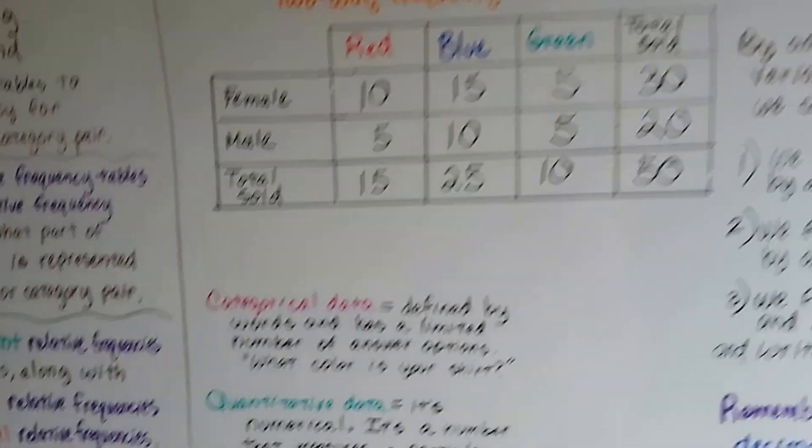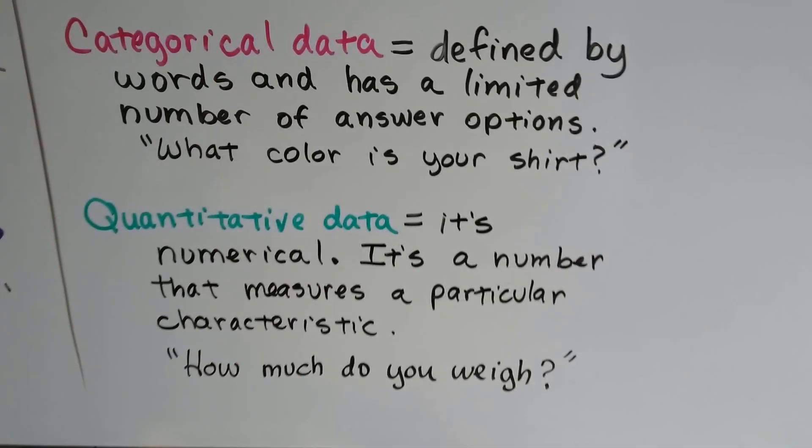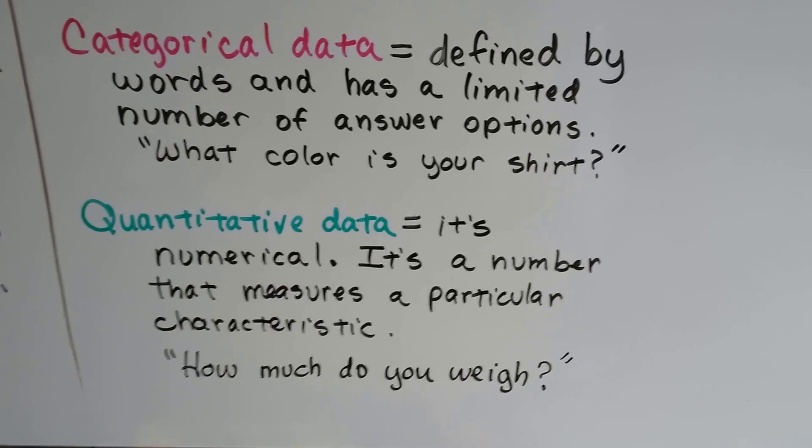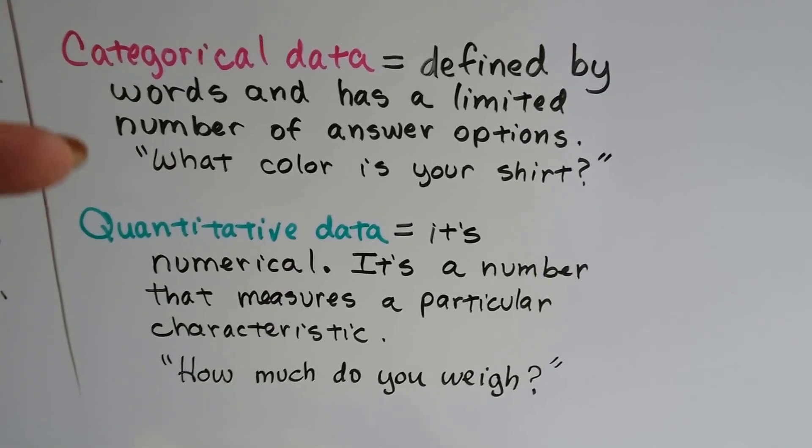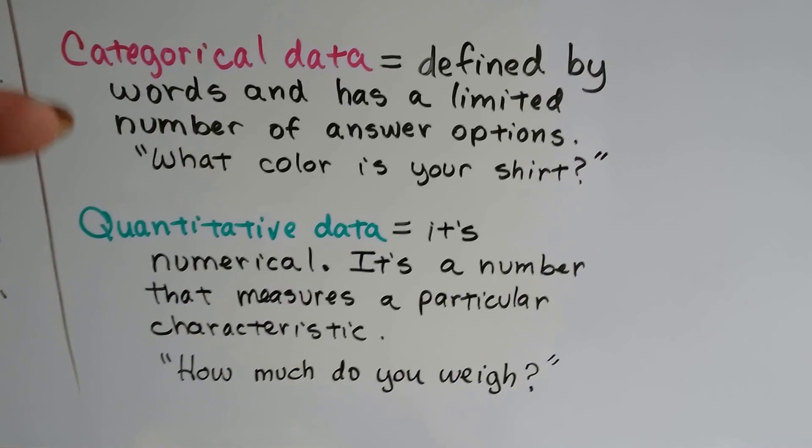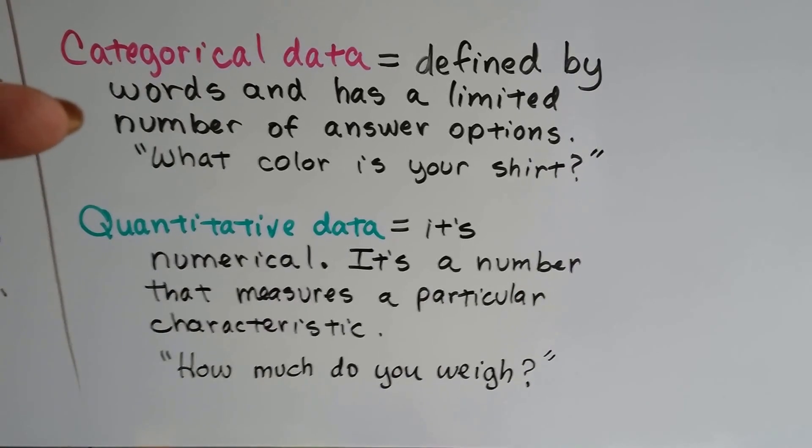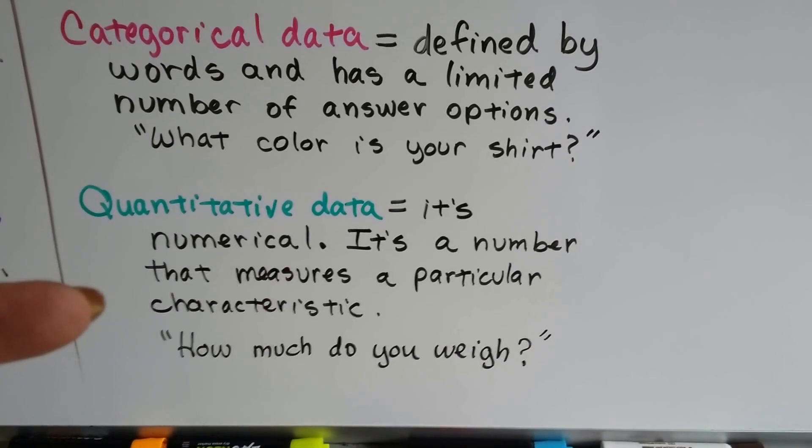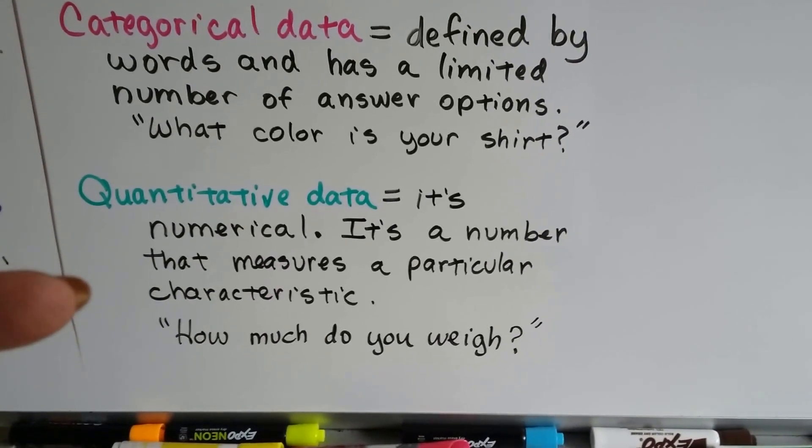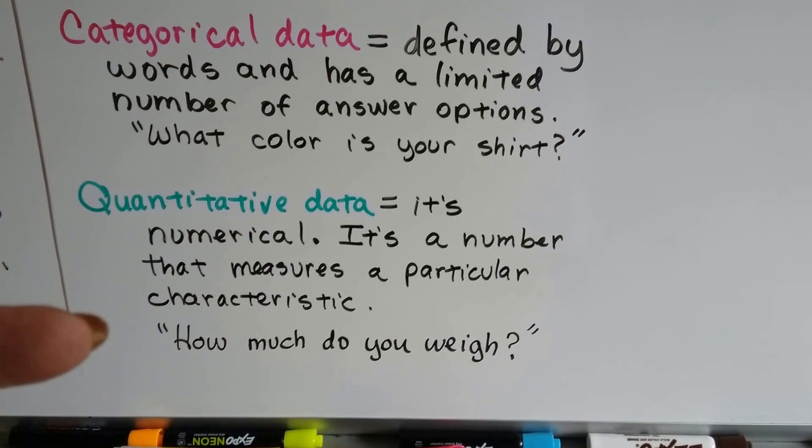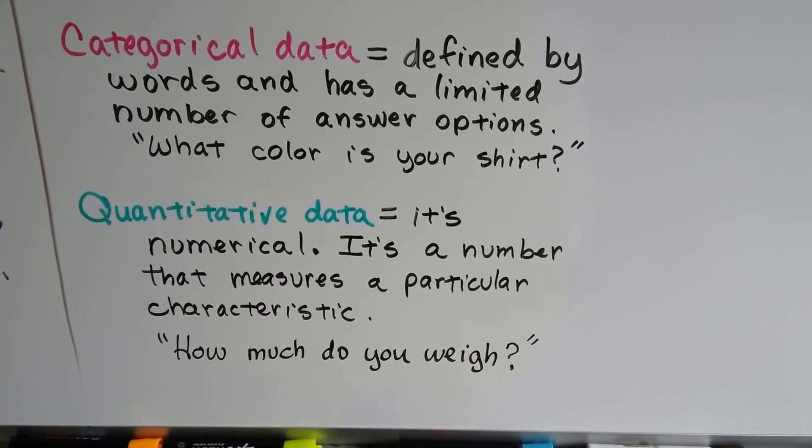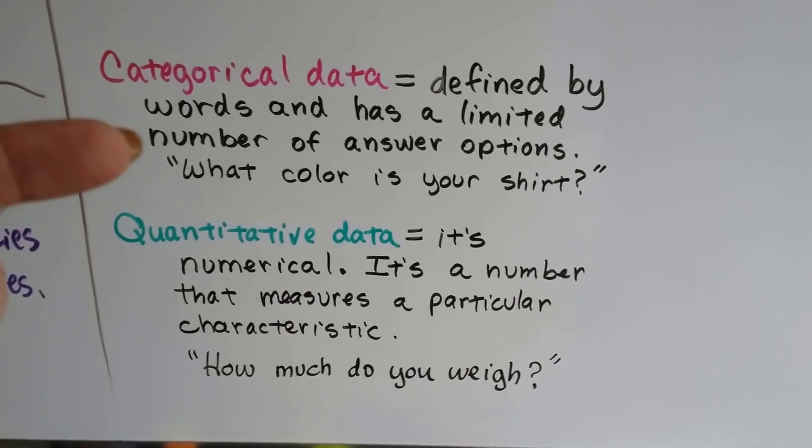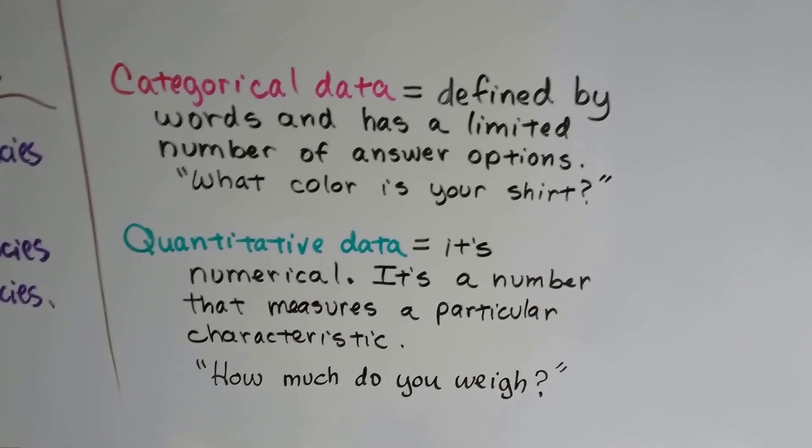Now, there's something I want you to take a note on. And I want you to know the difference between categorical data and quantitative data. Categorical data is defined by words and has a limited number of answer options like what color is your shirt, what color is your hair, what color is your backpack. Quantitative data, it's numerical. It's a number that measures a particular characteristic like how much do you weigh, how much does your backpack weigh. So that's a number, and that is putting it into a category of blue shirts.